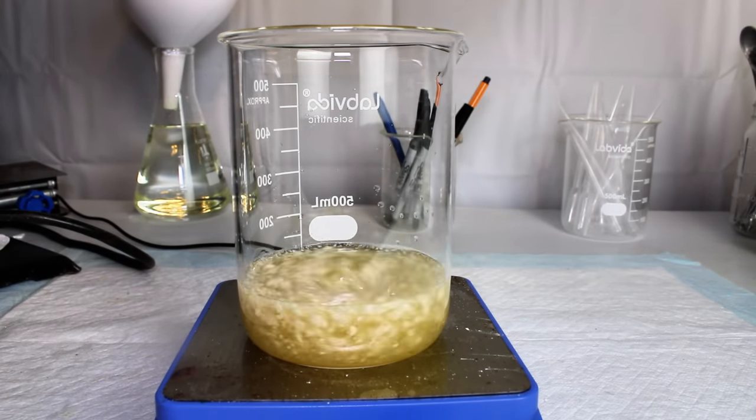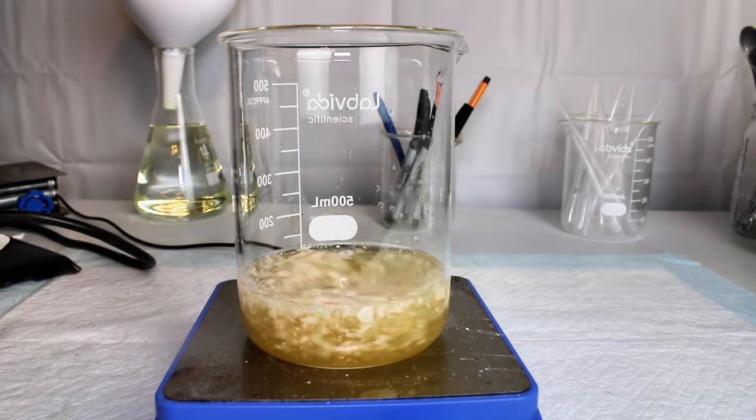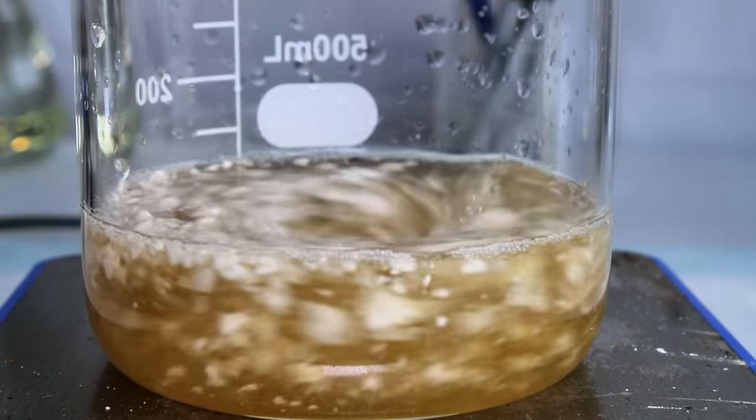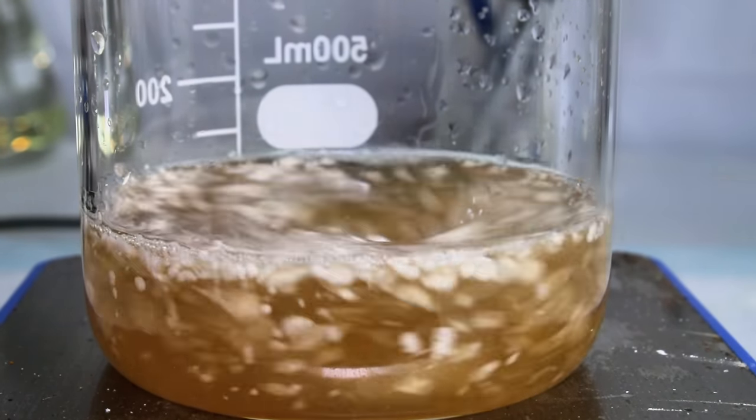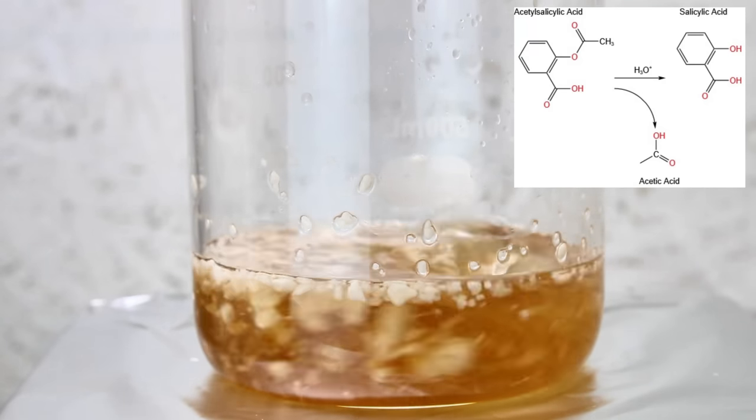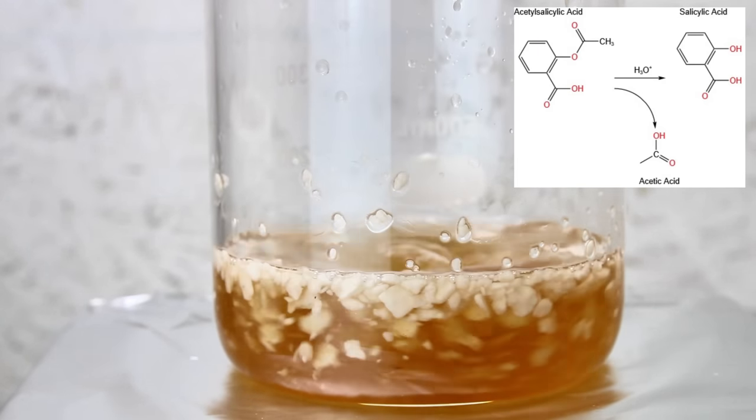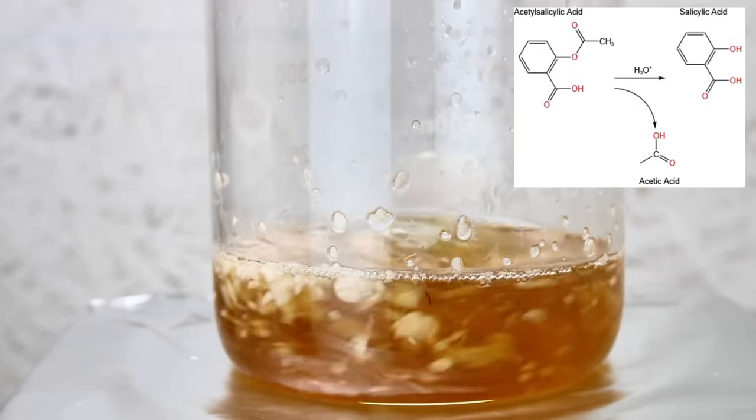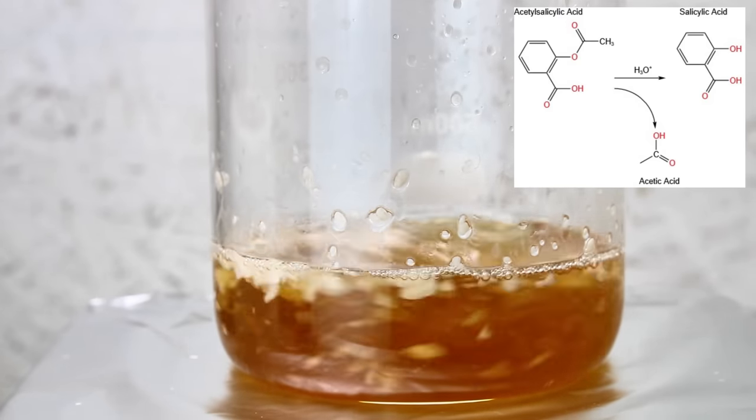Next, I moved this to my hot plate and heated the mixture to 110 degrees Celsius, which quickly dissolved the rest of the acetylsalicylic acid and turned it nearly black. What's happening here is a multi-step reaction. In the first step, acetylsalicylic acid is hydrolyzed by the hot sulfuric acid to salicylic acid and acetic acid, and this produces a bit of a vinegar smell.